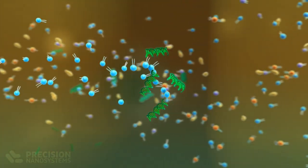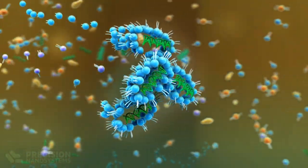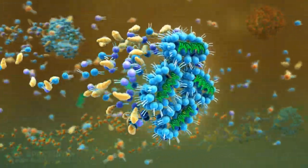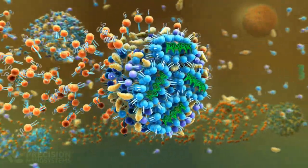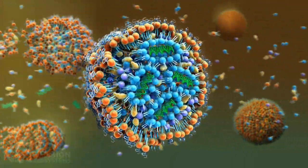the cationic lipids complex with the negatively charged nucleic acids to form the beginnings of the particle core. The helper lipids aggregate further as they come into contact with the aqueous solution. Finally, the PEG lipids orient themselves on the surface, with hydrophobic tails pointing inwards.